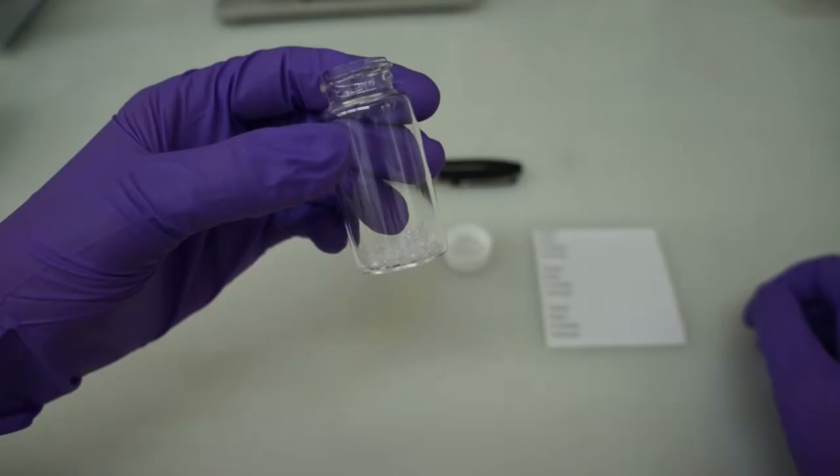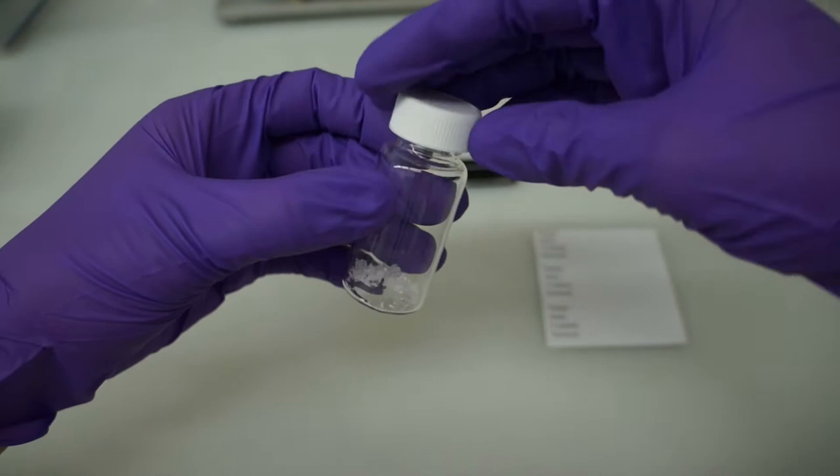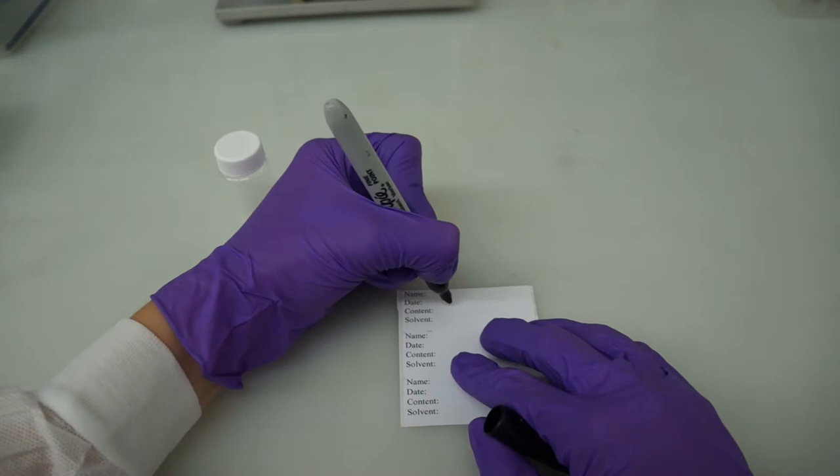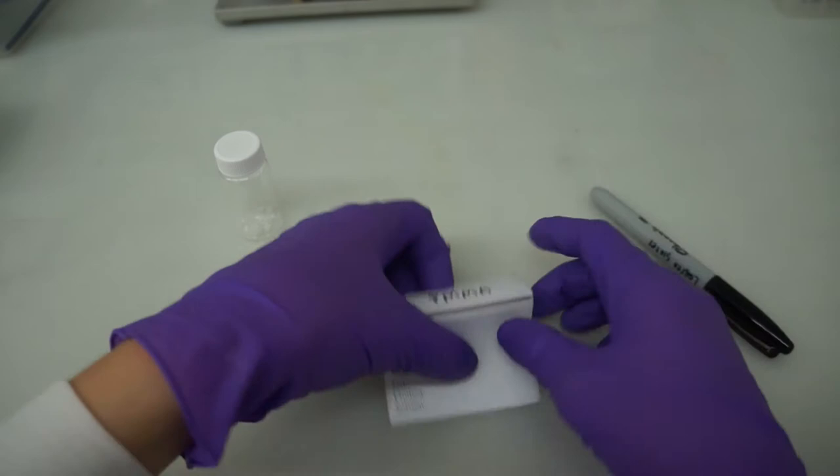Then carefully transfer the pieces from the mortar to your scintillation vial. Close the vial and label it. It's always important to label any sample that you create. Here I'm only identifying the contents of the vial, but you'll see in other samples that I also write my name and the date.